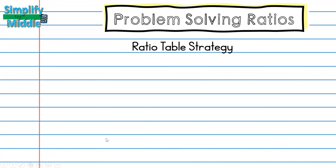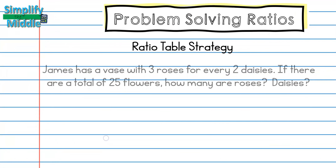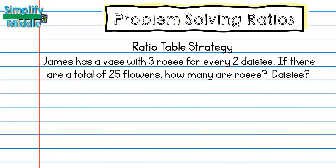Let's look at a different strategy — the ratio table strategy. Our new problem says that James has a vase with three roses for every two daisies. If there are a total of 25 flowers, how many are roses and how many are daisies?